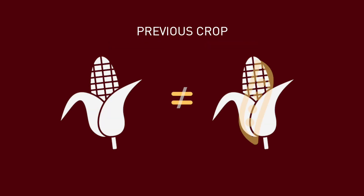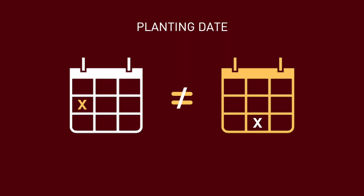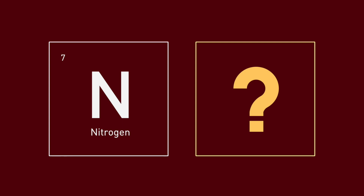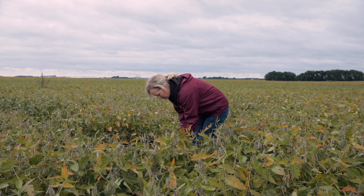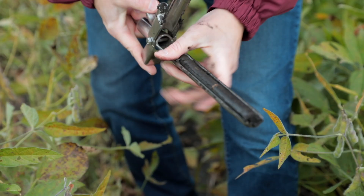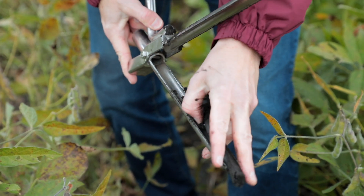Otherwise, if you change more than one variable at a time, you won't be able to say for sure whether any differences seen were due to the fertilizer treatment or some other factor. Next, you want to make sure that you select a section of the field that is as uniform as possible. Soil type, topography, weed pressure, and previous crop are just some of the factors that can create variability in your results. Make sure that the yield differences you're measuring are due to the treatment and not some underlying source of variability in the field.